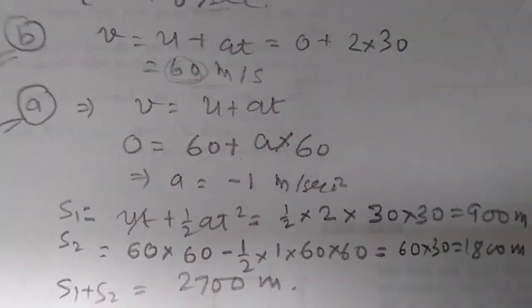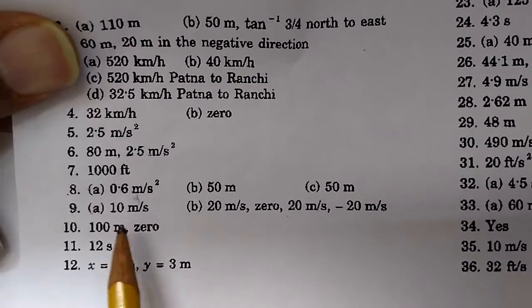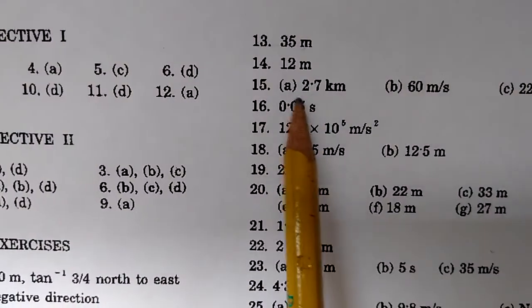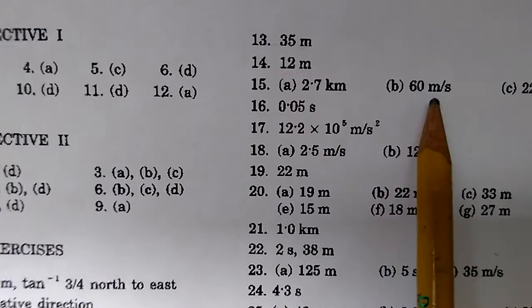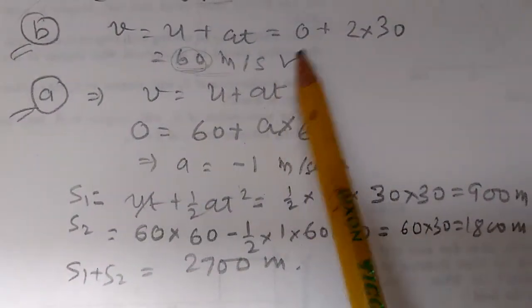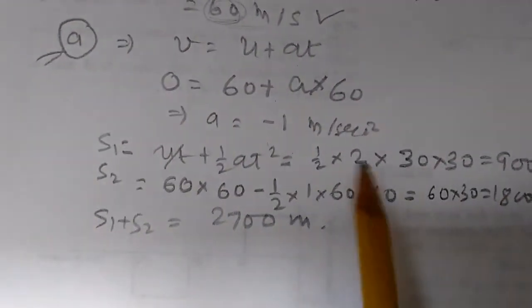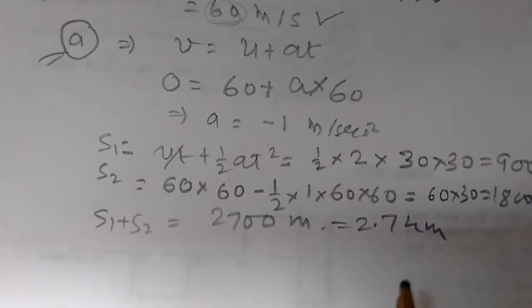Let's verify the answers before moving on. The answer to question 15: total distance is 2.7 kilometers and maximum speed is 60 meters per second — both correct. Now let's move on to Part C.